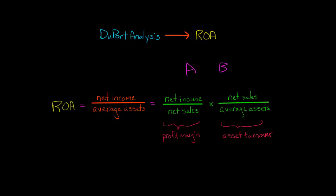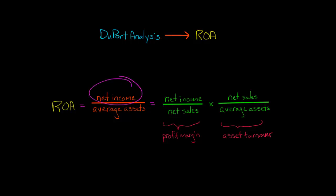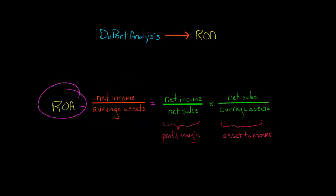It might be the case that company A is just a lot larger — it might be 10 times the size of company B — and so we'd expect it to have a higher net income. That's why we take net income and divide it by average total assets to get the return on assets, or ROA. Then we can make a meaningful comparison: how good is each company at generating profit given the assets it has at its disposal?